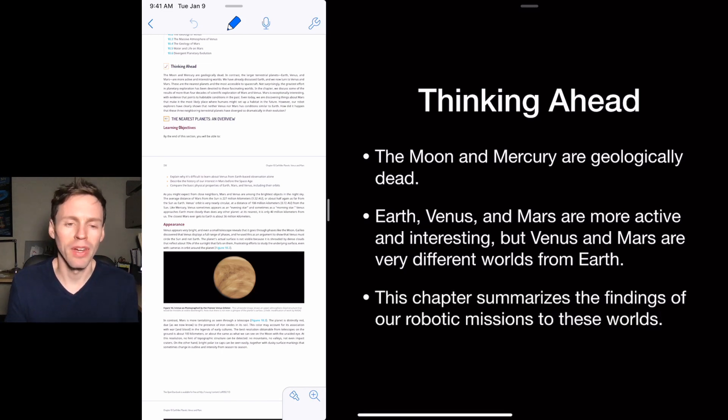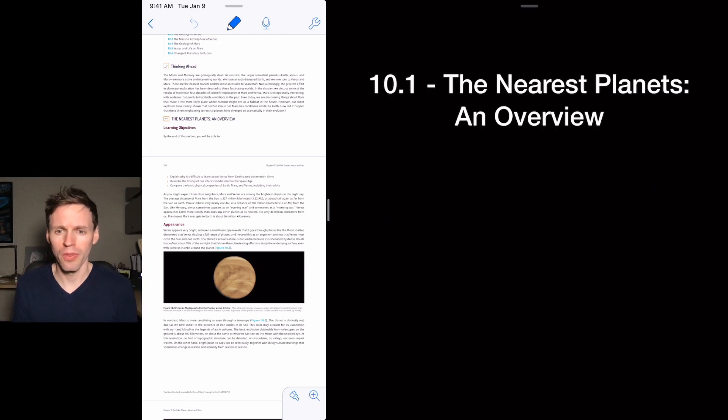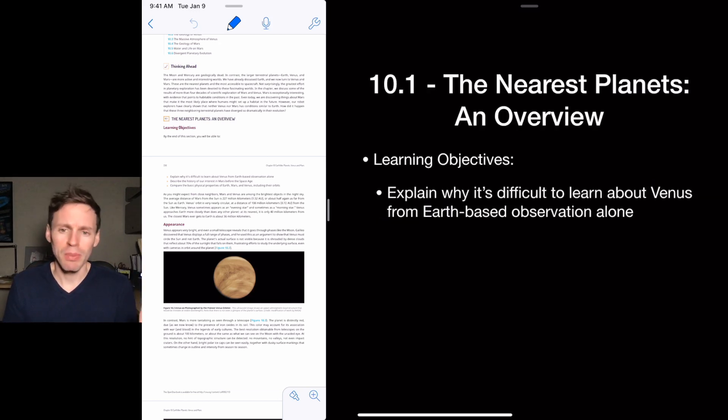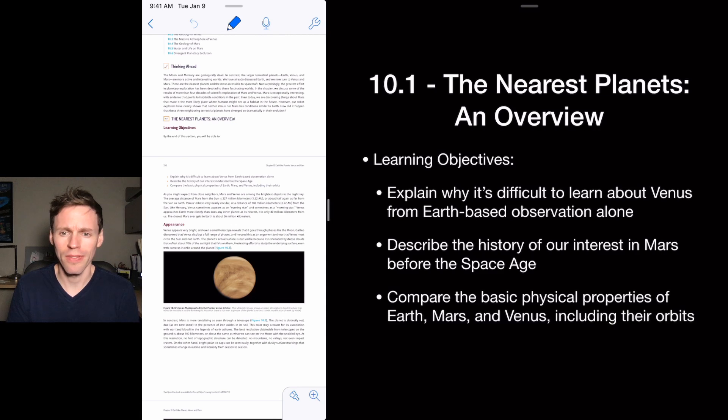We're going to summarize the findings of robots and what they've learned and taught us about what's going on in these places. Kind of weird we live in this universe with these things that you can walk around on. Okay, so overview. We want to explain why it's difficult to learn about Venus, covered in clouds, talk about the history of our interest in Mars.